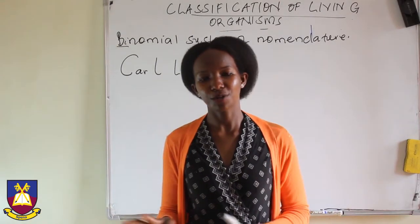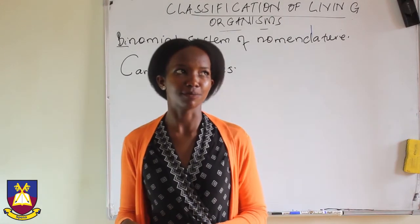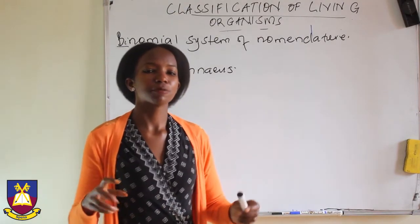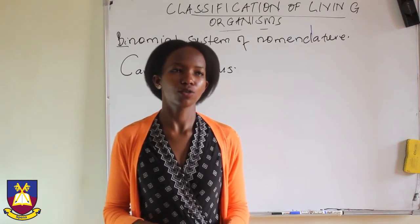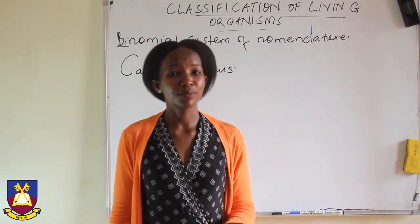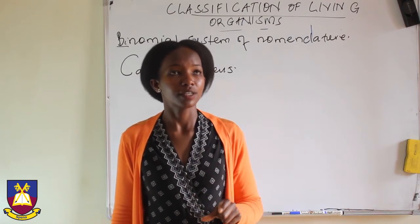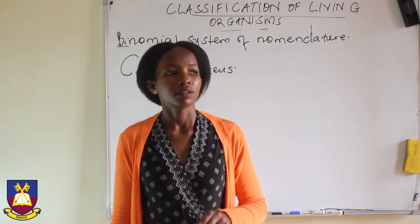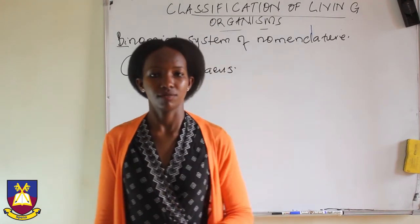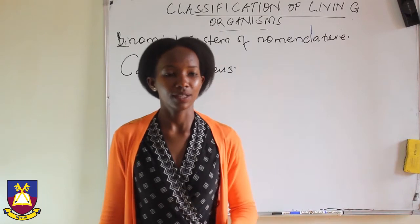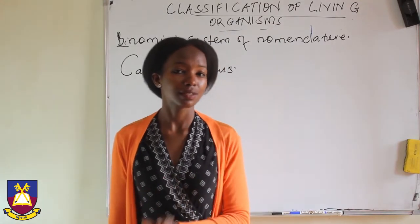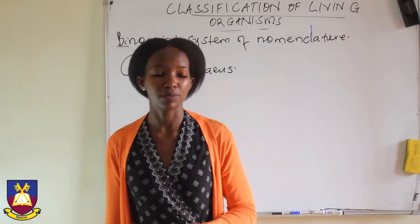This system was invented by a scientist we call Carl Linnaeus, who lived from 1707 to 1778. He came up with a system of naming organisms two names. For the most part, we have two names — one being your specific name and the other being the general name for your family. For example, if my name is Stella and my family is called Chimuli, my name will be Stella Chimuli. The same applies to organisms — we give them two names to better identify them.